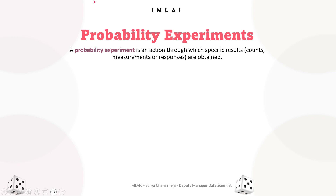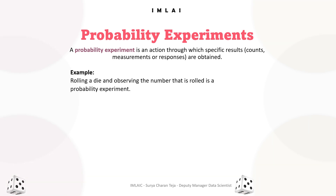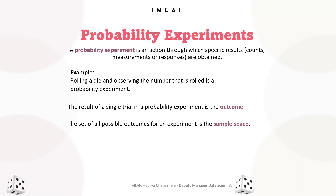Here are a few more aspects about the probability experiment. For example, rolling a die and observing the number that is rolled is a probability experiment. The result of a single trial in a probability experiment is the outcome. The set of all possible outcomes for an experiment is the sample space. The sample space when rolling a die has six outcomes.